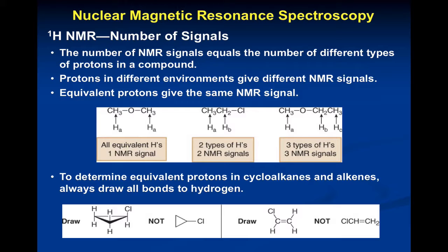Here I have HA and HC — both are CH3 groups, but are they identical in the NMR environment? No. This CH3 is attached to an oxygen, this CH3 is attached to another carbon — they are not related electronically. They will give rise to two different signals in the NMR. And then this carbon with two hydrogens is clearly different from the other two groups, so we're going to get three NMR signals.